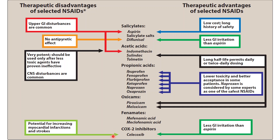Celecoxib is a selective COX-2 inhibitor, but because of inhibiting only COX-2 it can lead to myocardial infarction and stroke. It causes less GI irritation than aspirin because it does not reduce the synthesis of the gastric mucosa-protective prostaglandins that are COX-1 stimulated.